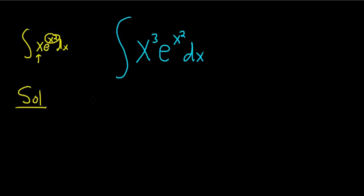Let's try that approach anyways and see if we can get things to work. So we'll start by letting u equal x squared. And then taking the derivative of both sides, du is equal to 2x dx.